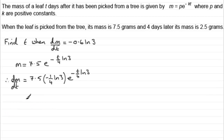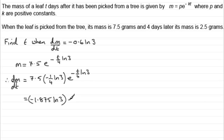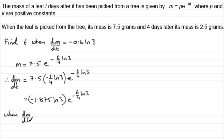Cleaning this up: 7.5 times minus a quarter gives minus 1.875. So dm/dt equals minus 1.875 times natural log of 3, in brackets, times e to the power minus t over 4 natural log of 3. We know that this has to equal minus 0.6 natural log of 3, so when dm/dt equals minus 0.6 natural log of 3, we can equate these two expressions.